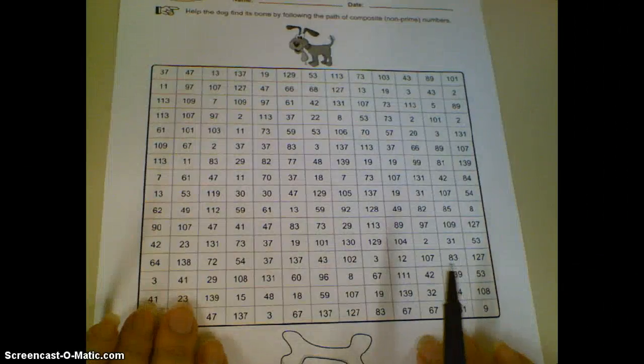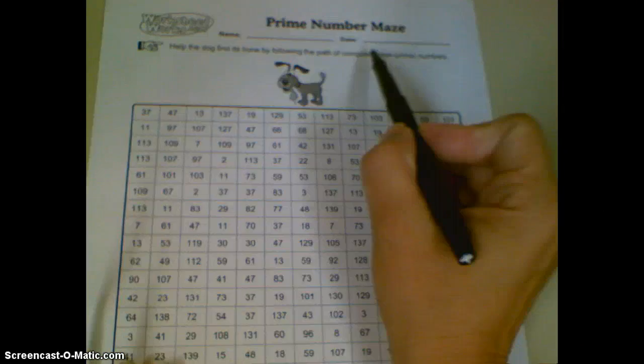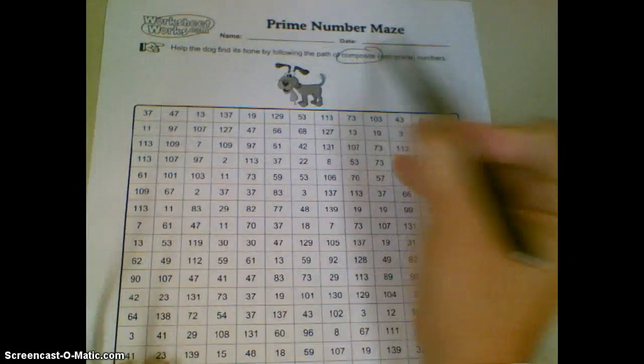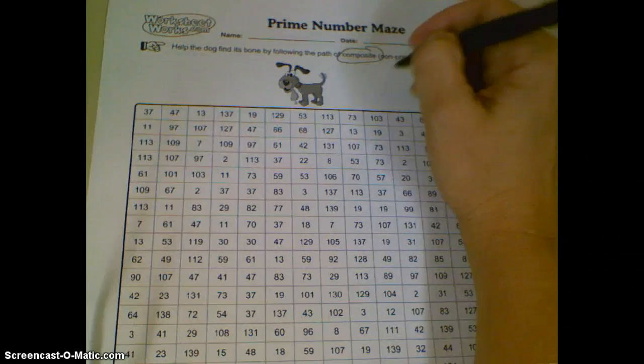Alright, 5th graders, today you've got another maze, but this time we're looking for composite numbers. Those are numbers that have more than two factors.